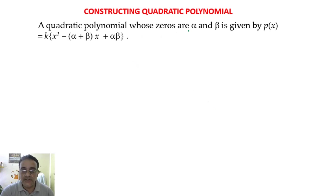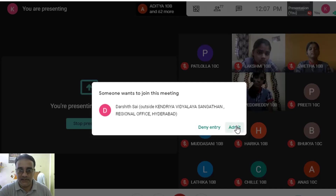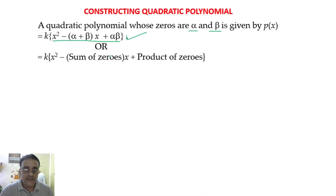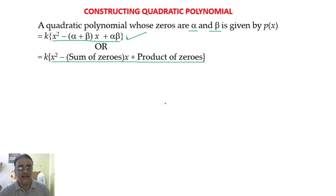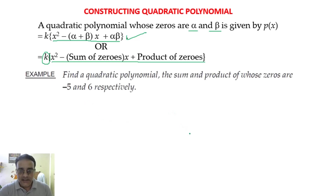A quadratic polynomial whose zeros are α and β is given by a standard formula. This formula can also be written without using α and β explicitly — some people write it as: k times [x² minus (sum of zeros) times x plus (product of zeros)]. Here we also write k. Let us see one example.